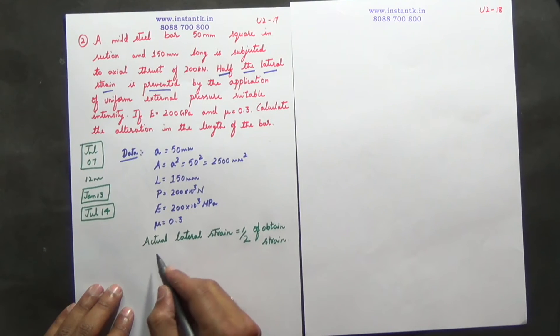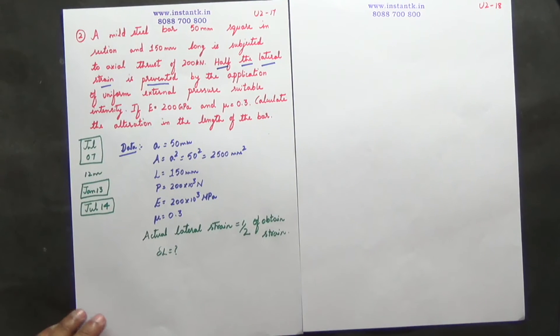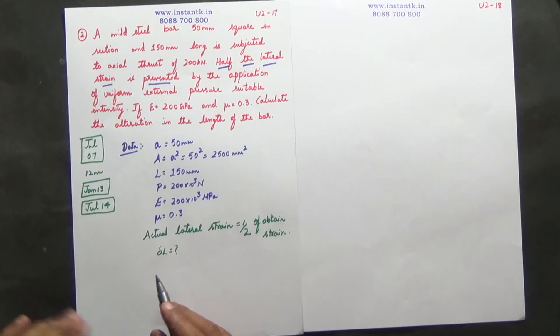So you must calculate the alteration in length, that is delta L. As usual, we must find longitudinal strain, then lateral strain, take half of the lateral strain, and get the new value of delta L.